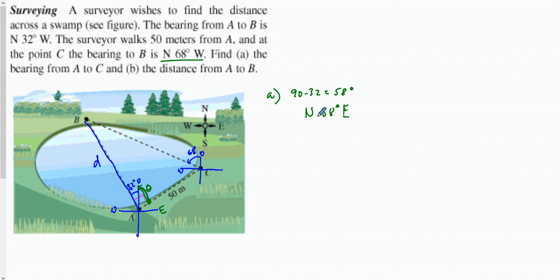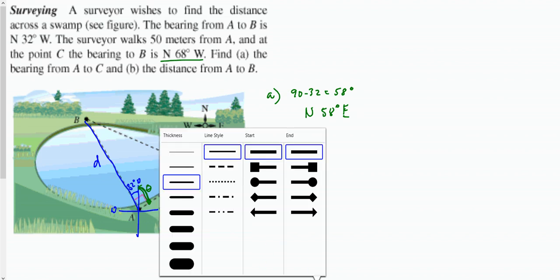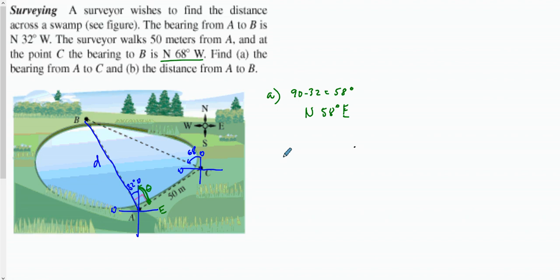We found that angle: North 58 degrees East. For the second part, we're going to find the distance from A to B. We know this length here and we have a right triangle with a right angle, but we need to figure out another angle of the triangle.